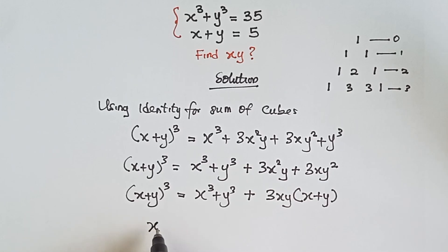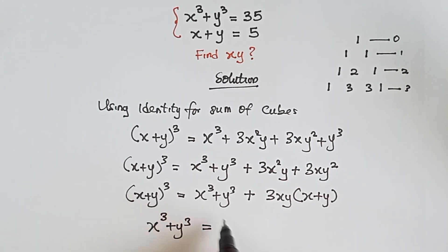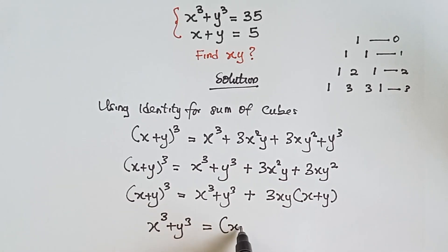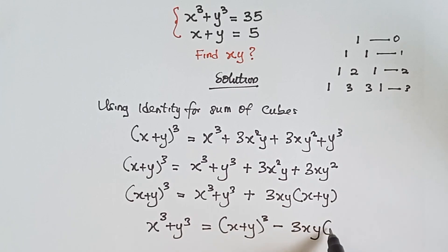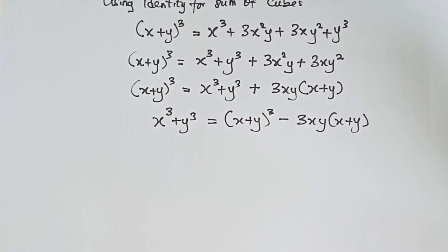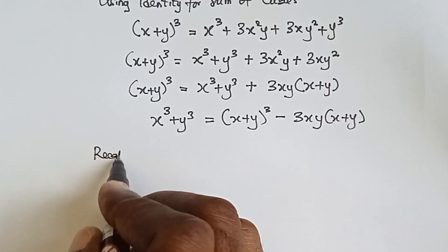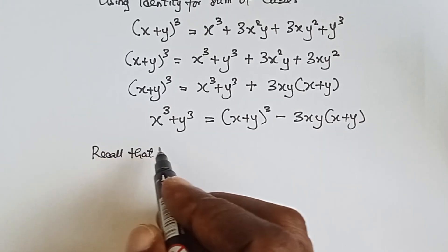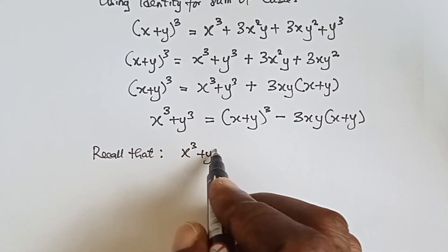Taking the 3xy(x+y) term to the other side, we get: x cubed plus y cubed equals (x plus y) cubed minus 3xy(x plus y).